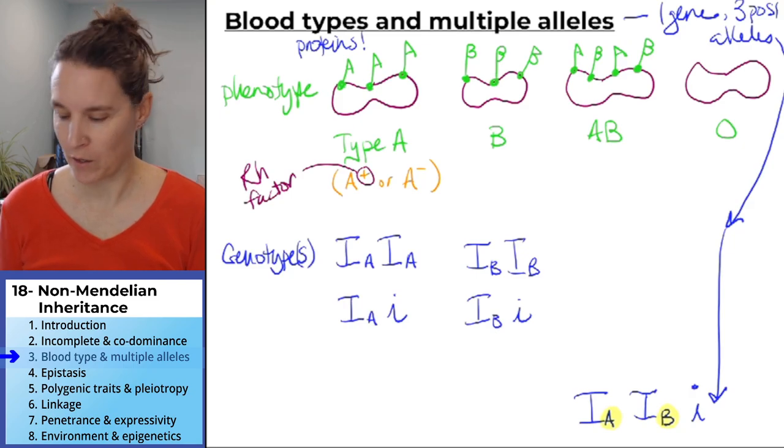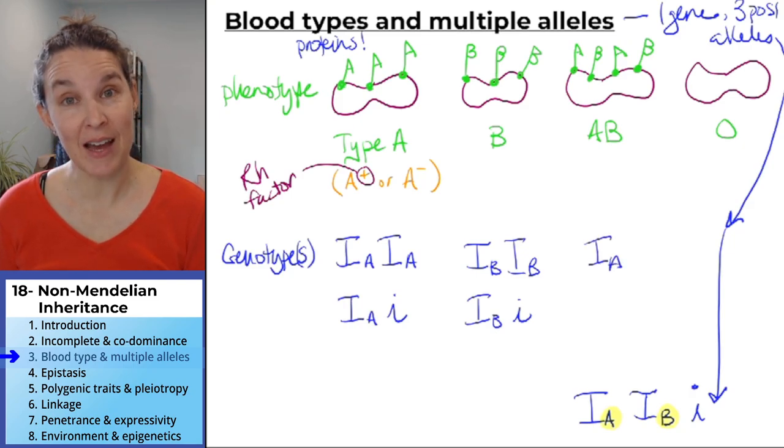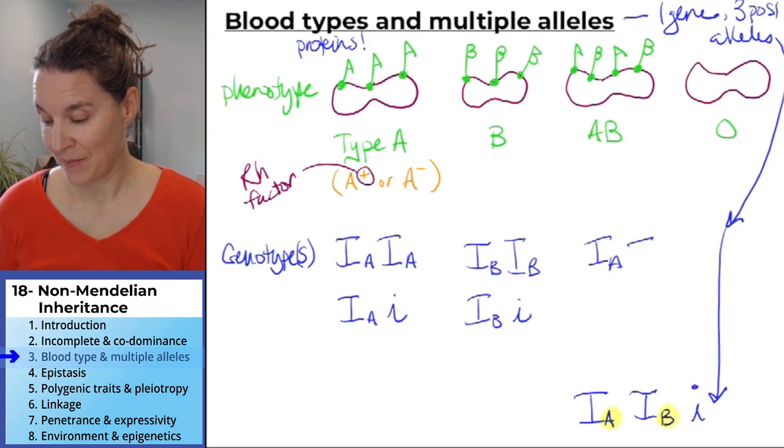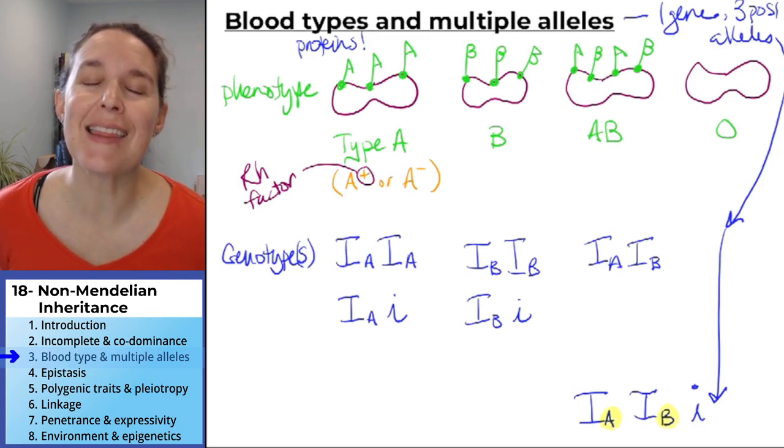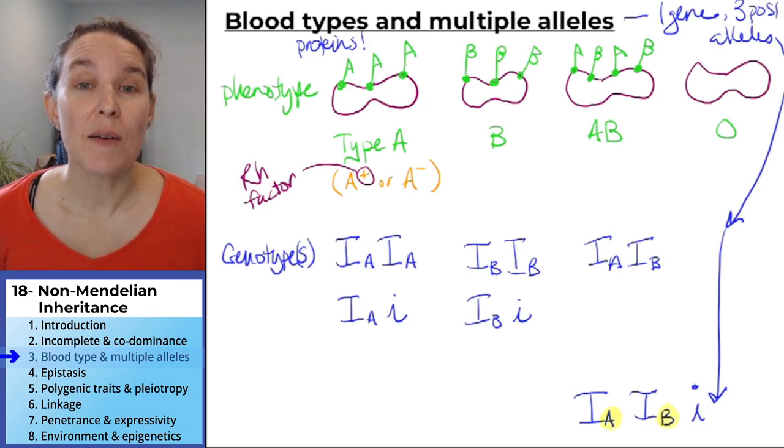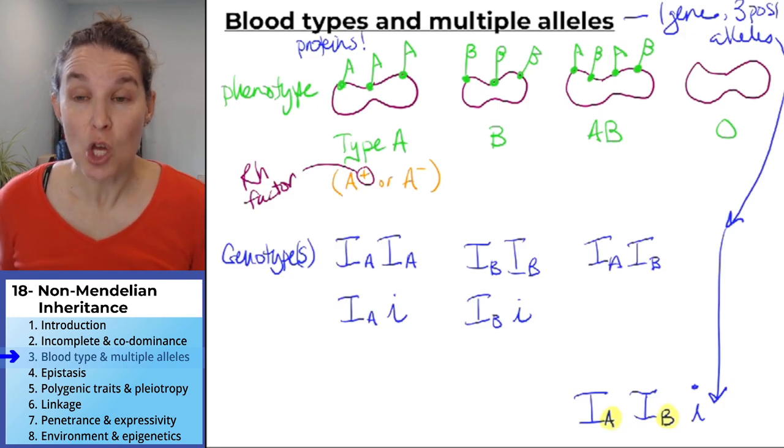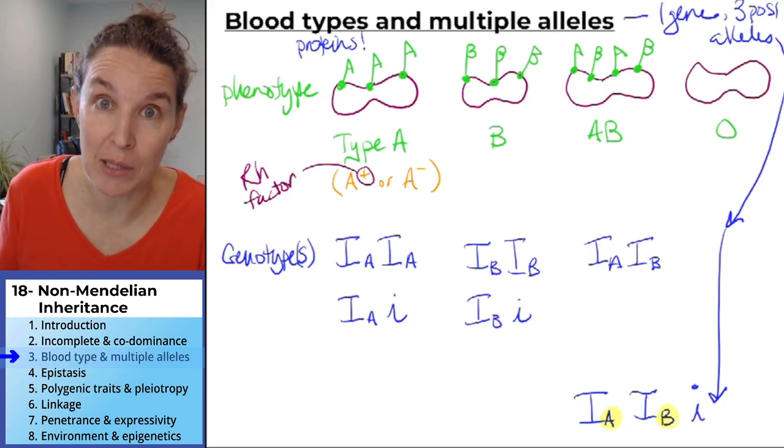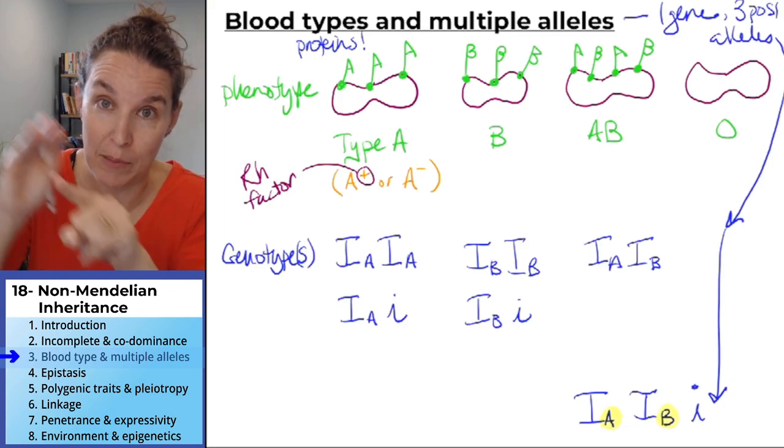What about AB blood? What are you going to do? Got to have the IA to give rise to the A antigens. Got to have the IB to give rise to the B antigens. This is why blood typing is an example of codominance. Because you fully express a type A blood and type B blood at the same time, hence type AB blood.